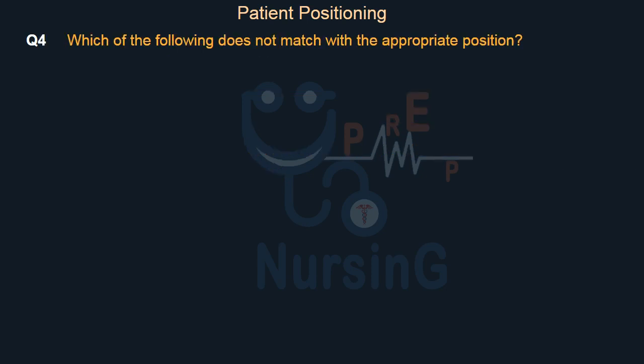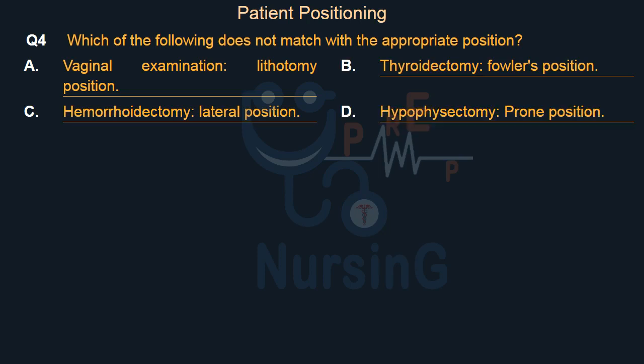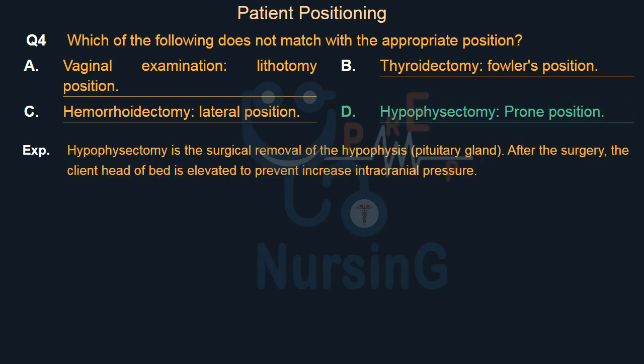Which of the following does not match with the appropriate position? Option A, vaginal examination; Option B, thyroidectomy; Option C, hemorrhoidectomy; Option D, hypophysectomy. The right answer is Option D, hypophysectomy — prone position is incorrect. Hypophysectomy is the surgical removal of the hypophysis (pituitary gland). After surgery, the client's head of bed is elevated to prevent increased intracranial pressure.